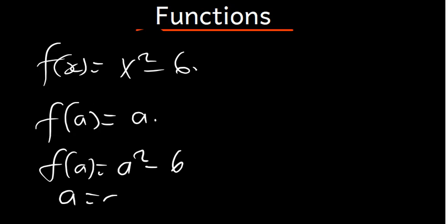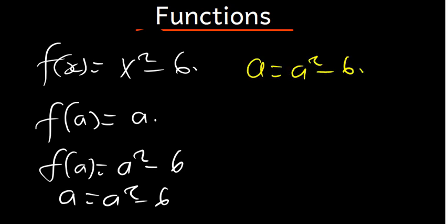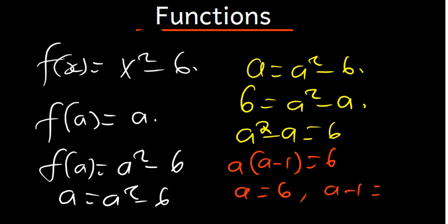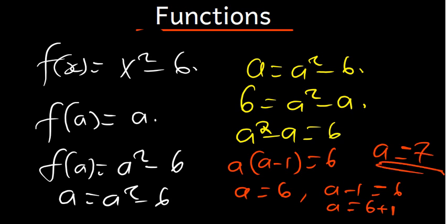We set a equal to a squared minus 6. Rearranging, we get a squared minus a equal to 6. Factoring out a gives us a times open bracket a minus 1 close bracket equal to 6. From here, a is equal to 6, and for the other factor, a minus 1 equals 6, so a equals 7. The possible values of a are therefore a equal to 6 and a equal to 7.